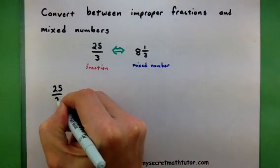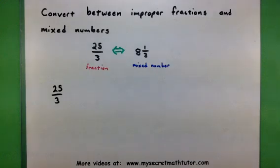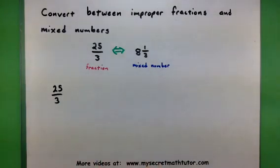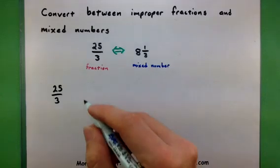So when you start with an improper fraction and you want to turn it into a mixed number, you want to find out how many times the bottom goes into the top. So basically you go through a division process.